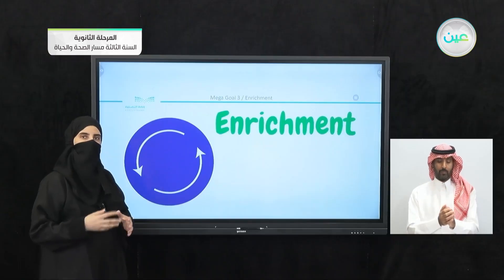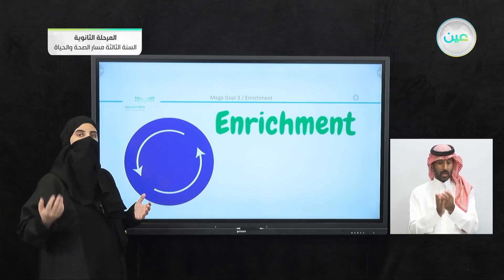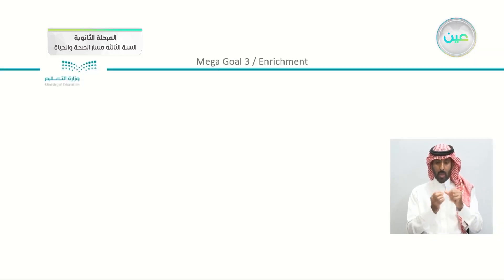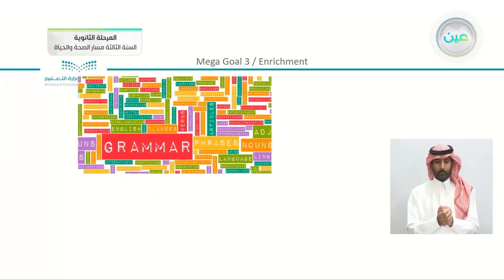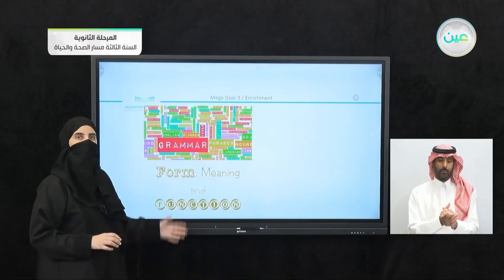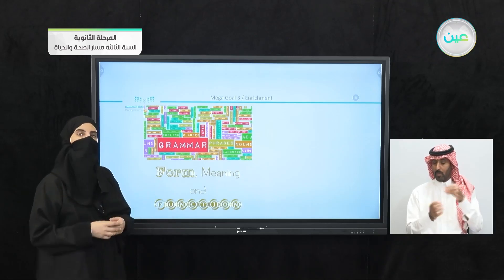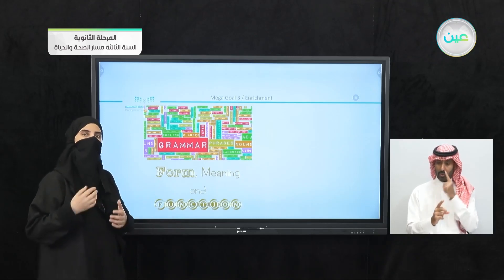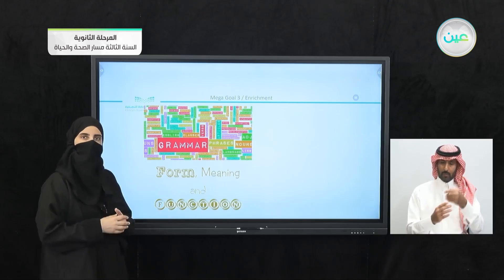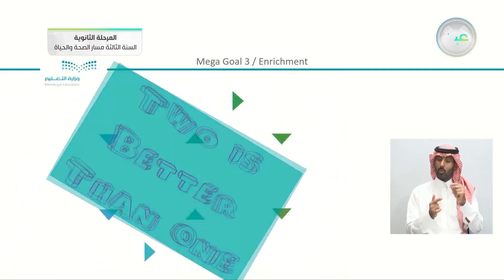We have studied four units with two lessons each. In each unit, we have the grammar lesson and the four meaning and function lesson. We are going to pass by these two parts. We are going to start with our first unit: Two is Better Than One.